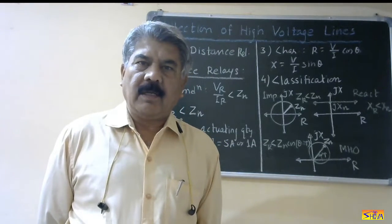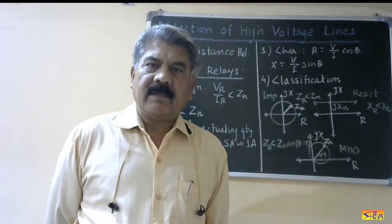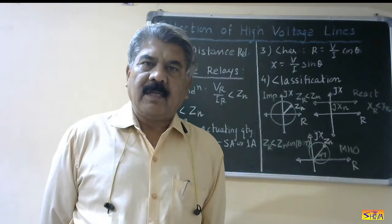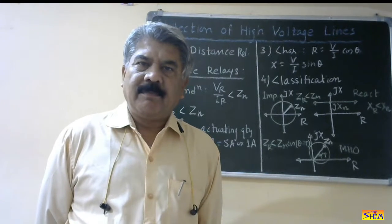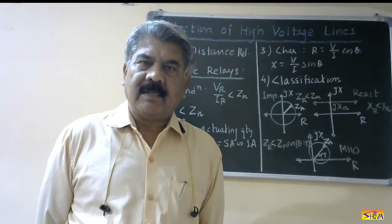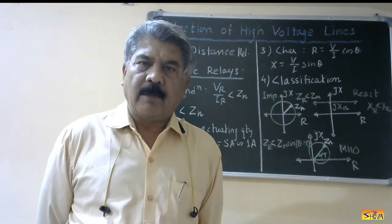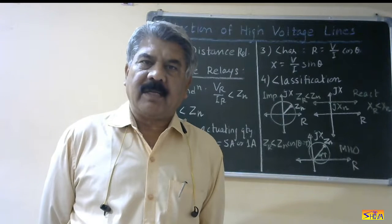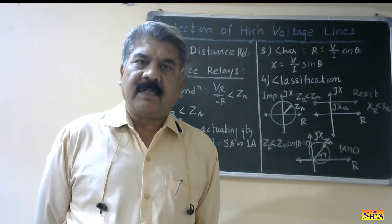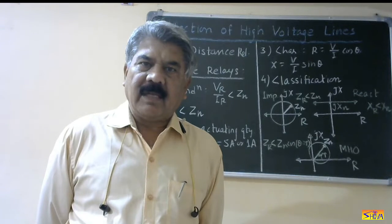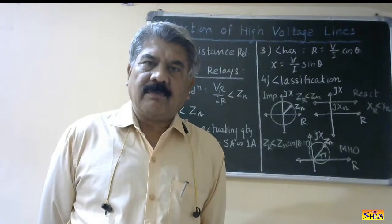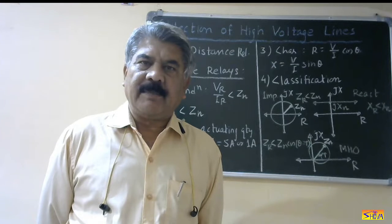Hello friends, good morning. In my last to last class, I had explained the limitations of overcurrent relays. The limitations were basically that operating time is relatively large, and the operating time depends on the magnitude of the current, which is affected by location of the fault, type of the fault, fault impedance, and generating conditions. Therefore, the application of overcurrent relays is limited to low voltage lines, that is distribution lines only.